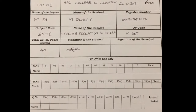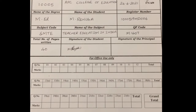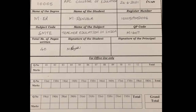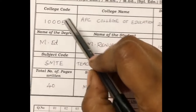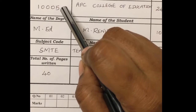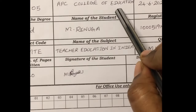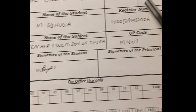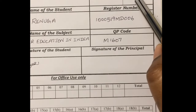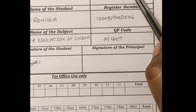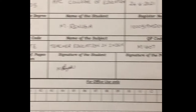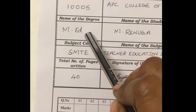This is the front sheet of the answer booklet. Please use only black color ballpoint pen and block letters to fill this sheet. First, write your college code which is in your hall ticket, then write the full name of your college, then write the date of your examination. If you are writing your examination in the morning session, tick forenoon, else tick afternoon. Then write the name of your degree.